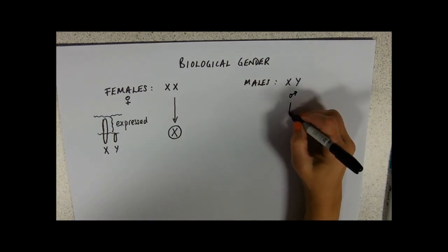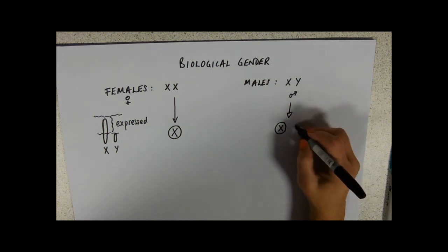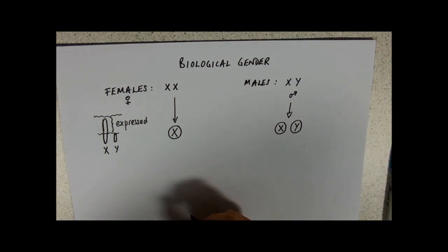If a male produces gametes, half of his sperm are going to have X chromosomes and half his sperm are going to have Y chromosomes in.